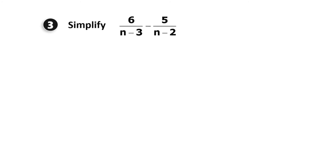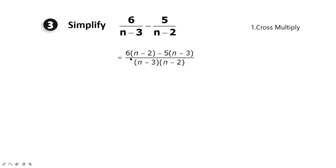Question number 3: simplify 6/(n - 3) minus 5/(n - 2). The first step is to cross multiply. The 6 will multiply (n - 2) and the negative 5 will multiply (n - 3), giving 6(n - 2) - 5(n - 3) over the same denominator (n - 3)(n - 2).